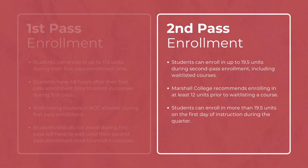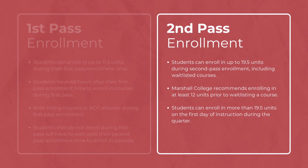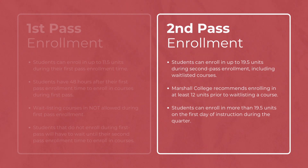Second pass enrollment: students can enroll up to 19.5 units during their second pass, including waitlisted courses. Marshall College recommends enrolling in at least 12 units prior to waitlisting courses. Students can enroll in more than 19.5 units on the first day of instruction during the quarter.